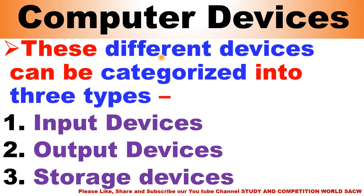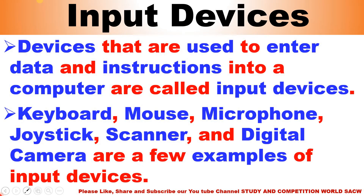These different devices can be categorized into three types. First is input devices. Second is output devices. Third is storage devices, like RAM.